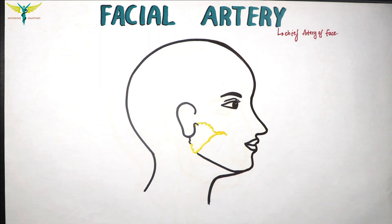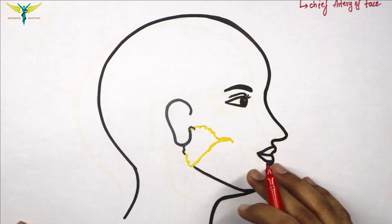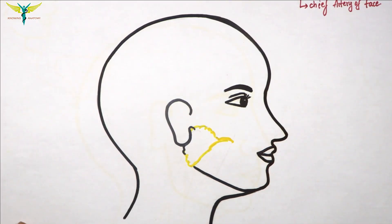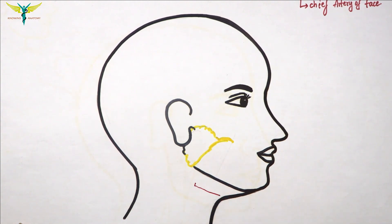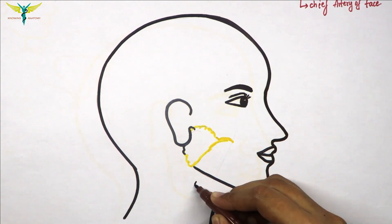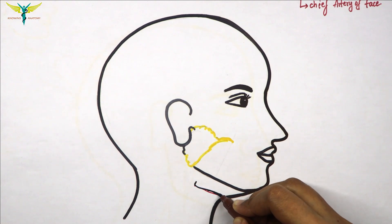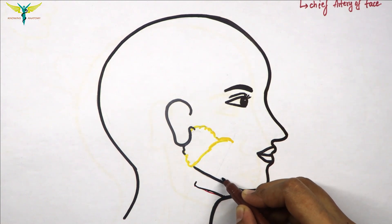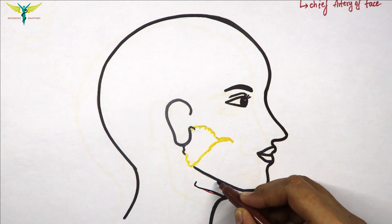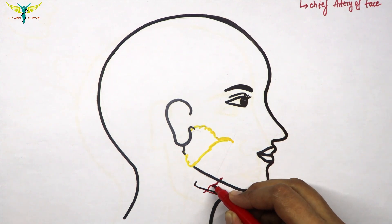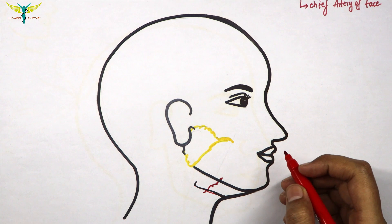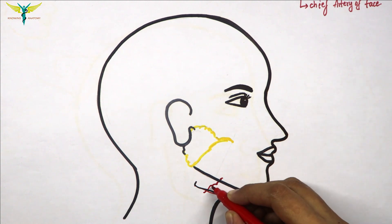The facial artery arises from the external carotid artery in the neck, at the level of the greater cornu of the hyoid bone. From the greater cornu of the hyoid bone, it enters into the submandibular region in a looped fashion.